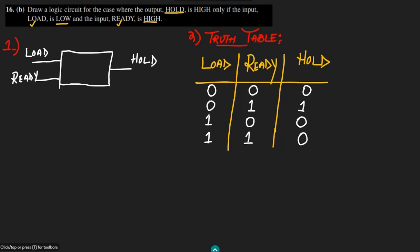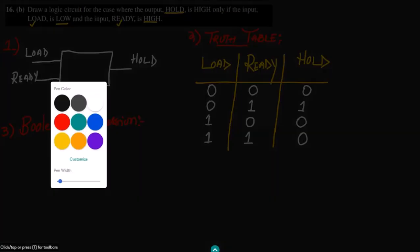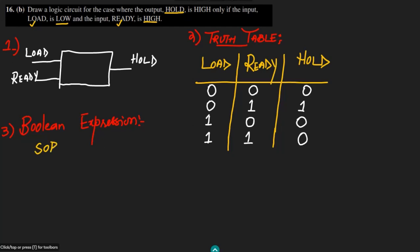This truth table comprehensively explains the statement of the question. In step three we write the boolean expression. We'll use the sum of products method, which means we identify the inputs for which the output is high — and that is this one entry.